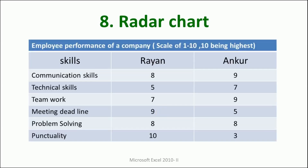Let's understand the radar chart with the help of an example. We have two employees here — Ryan and Ankur — and these are the different variables on the basis of which they have been given marks. The number of dimensions in the radar chart corresponds to the number of variables: one, two, three, four, five, six. So we will be comparing these two candidates on the basis of these six variables.